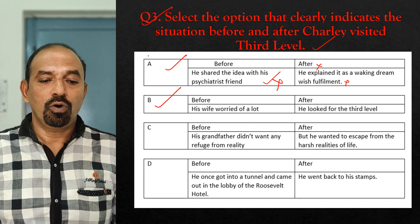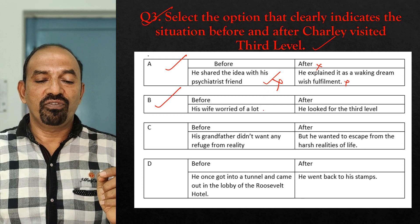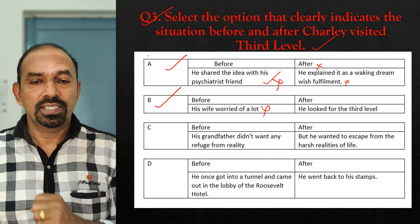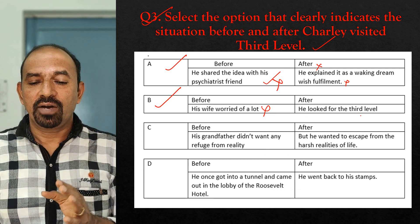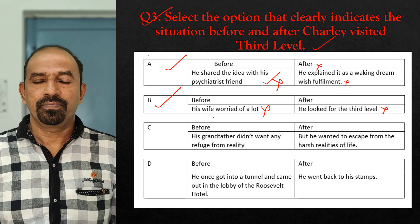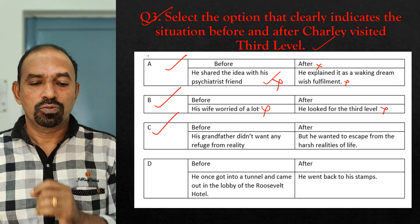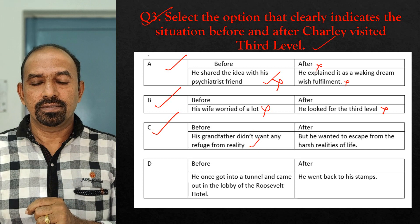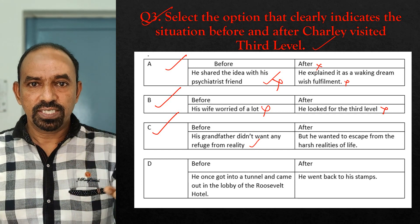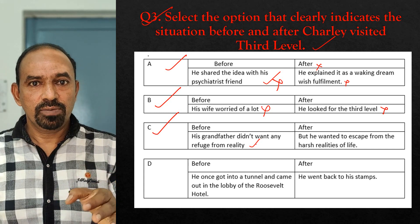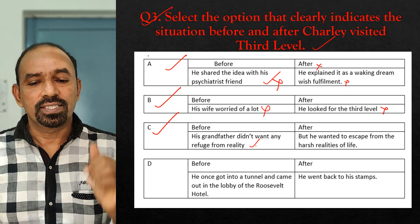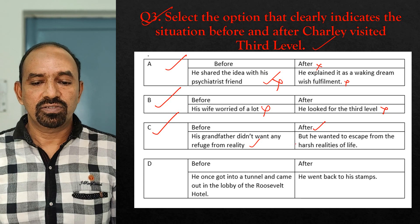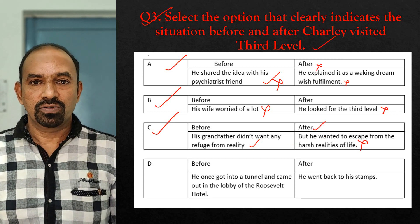Option B — Before: His wife worried a lot. His wife did not worry a lot before he visited the third level. Option C — Before: His grandfather didn't want any refuge from reality. This also did not happen before the third level visit; all these references came after he found the third level. After: He wanted to escape from the harsh realities of life — this is not an after-effect either.